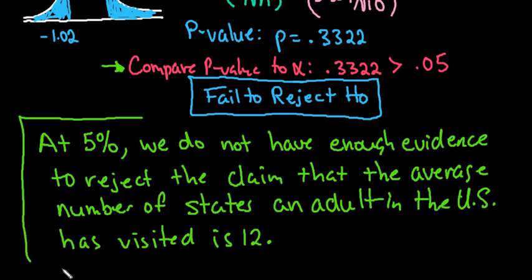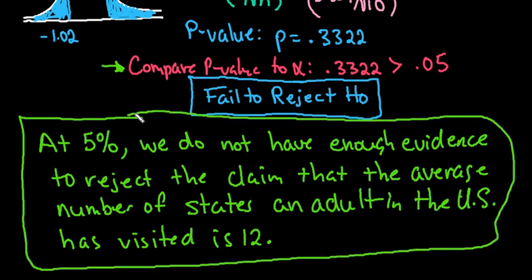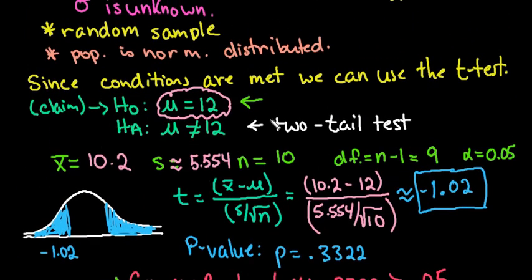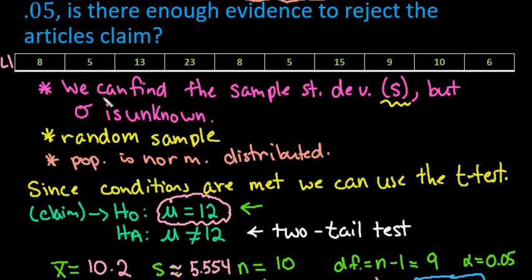So based on this sample of 10, we do not have enough evidence to reject the claim. It does not mean that this might not be true. It just means that our evidence points towards this. A sample of 10 is usually not a very large sample, and so you would probably retest this with a larger sample. Like if you wanted to have a more accurate test, you would probably run this with a lot more data points.